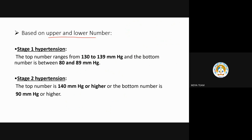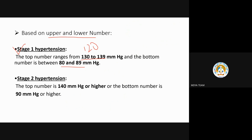Based on changes in systolic and diastolic pressure: Stage 1 hypertension — the top number (systolic) goes from 130 to 139, and the bottom number (diastolic) goes from 80 to 89. This is just a little above normal, the starting stage, not too severe.